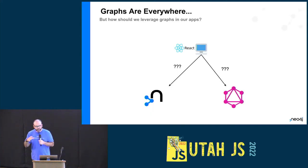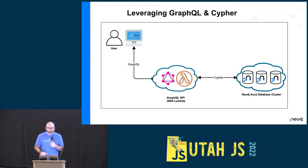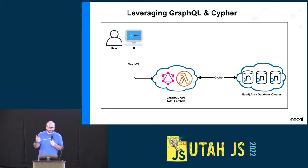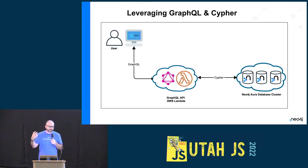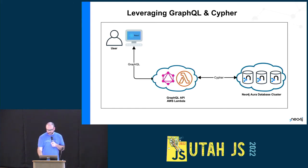As we think about how to architect our application, GraphQL wants to sit in between the client and the database as the API layer. We don't want to just expose our database directly to the world — we want custom logic, authorization, caching, and things like that in the API layer.